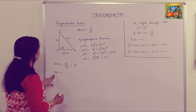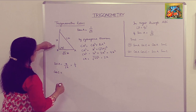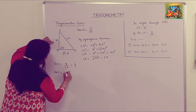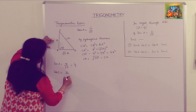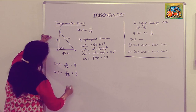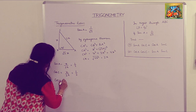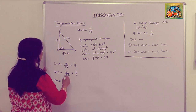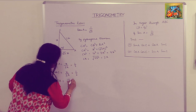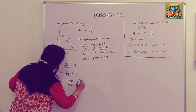Cos C will be base upon hypotenuse. That is root 3 x upon 2x, which equals root 3 upon 2. So cos C is equal to root 3 upon 2.